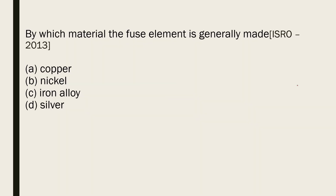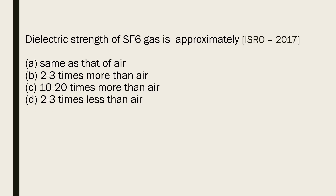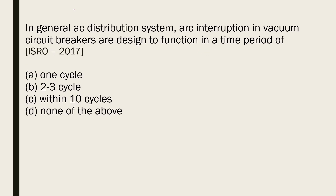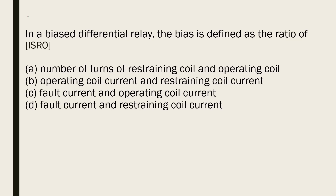Silver is the best fuse element material. The dielectric strength of SF6 gas is 2 to 3 times more than air. A negative sequence relay is used for protection of generators. For general AC circuit breakers and AC distribution systems, arc interruption in a vacuum circuit breaker is designed to function in as short a time as possible — one cycle. In a biased differential relay, bias is defined as the ratio of the number of turns of the restraining coil.